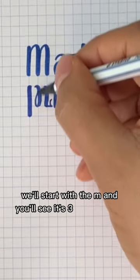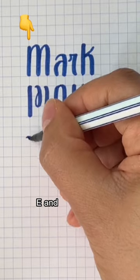We'll start with the M, and you'll see it's three downstrokes, so it takes up the L, E, and R of Laurel.